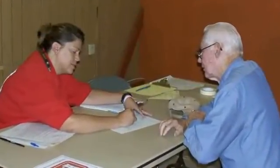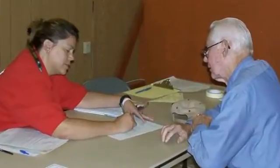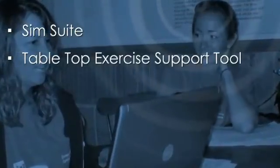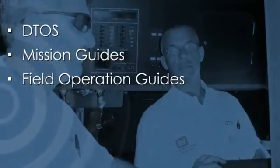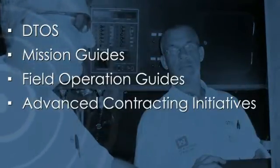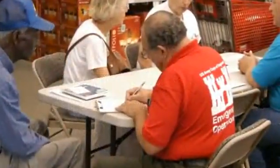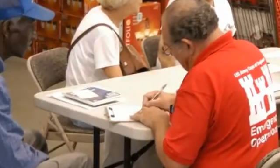This video has provided an overview of the tools available to emergency responders and a working knowledge of the PRT Level 1 and Level 2 curriculum. These tools include SimSuite, the Tabletop Exercise Support Tool, EngLink, and the RAP and C-RAP programs. This module has also provided awareness training for DTAS, mission guides, field operation guides, advanced contracting initiatives, and standard operating procedures. Remember, the emergency management community is tight-knit and robust. There are always tools and capabilities available to emergency responders, whether they are training or deployed.